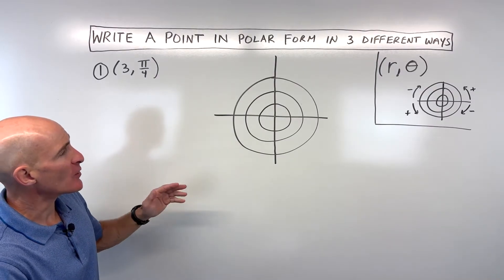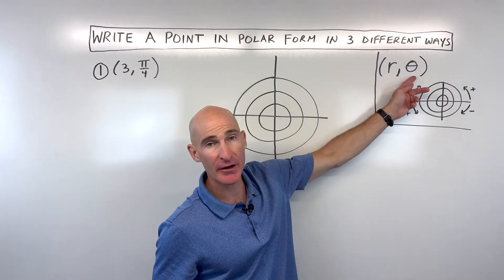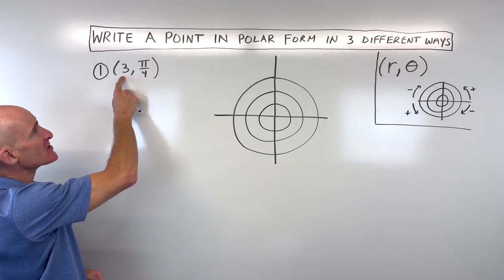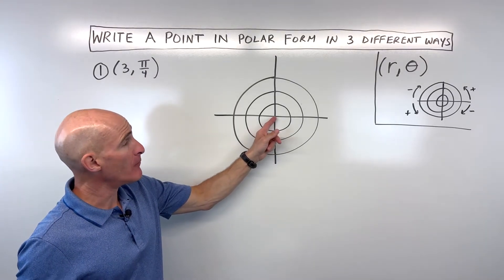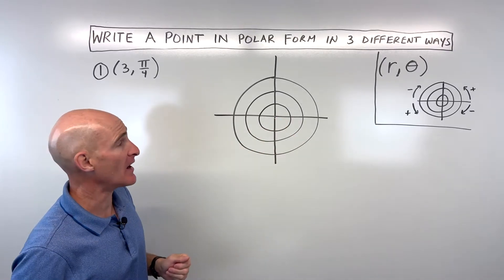When you write a point in polar form in this r, theta form, you start with the first number. This is the r value or the radius or the distance from the pole, which is like our origin in rectangular form, the xy form.